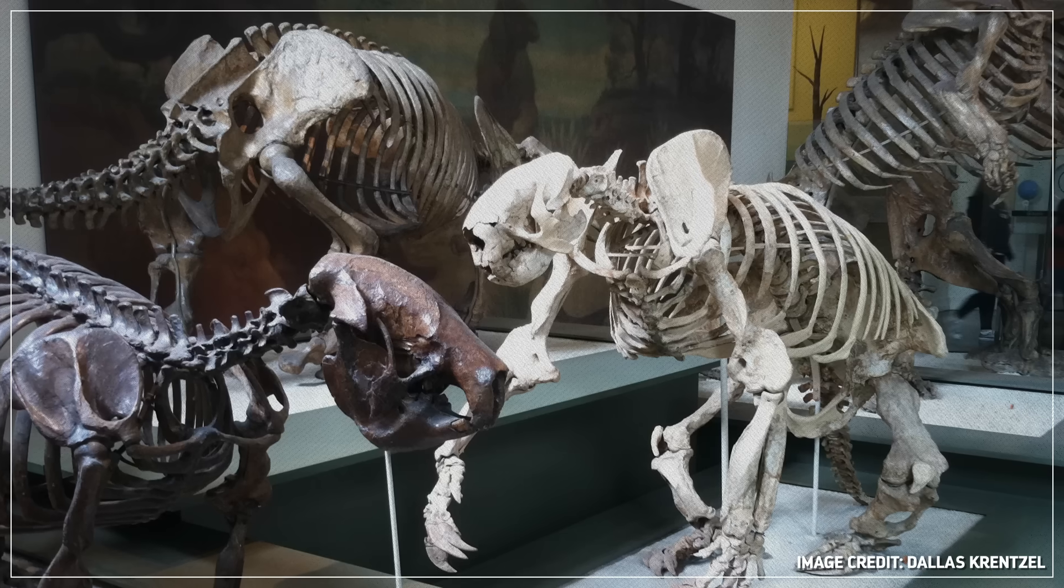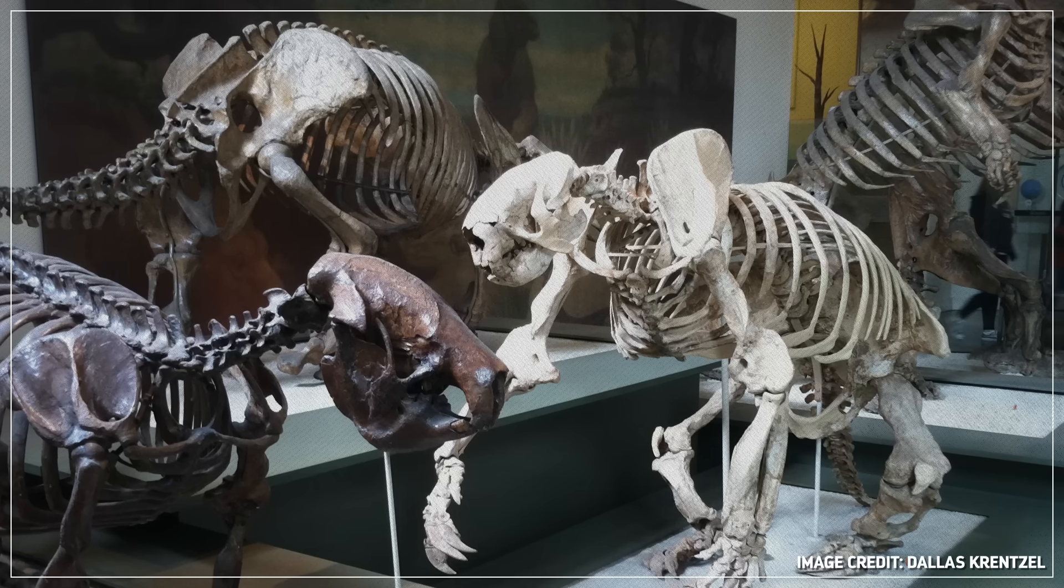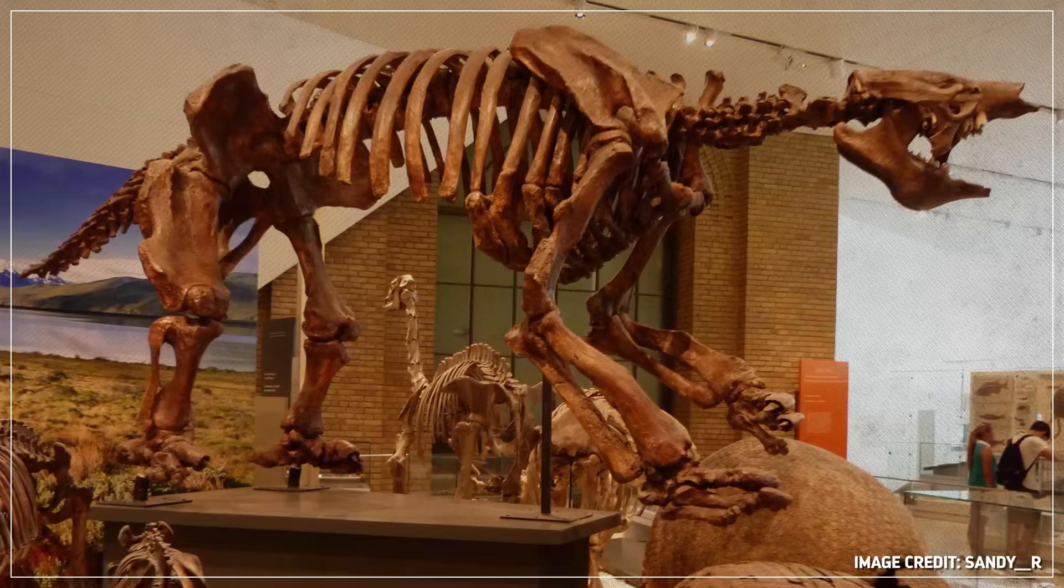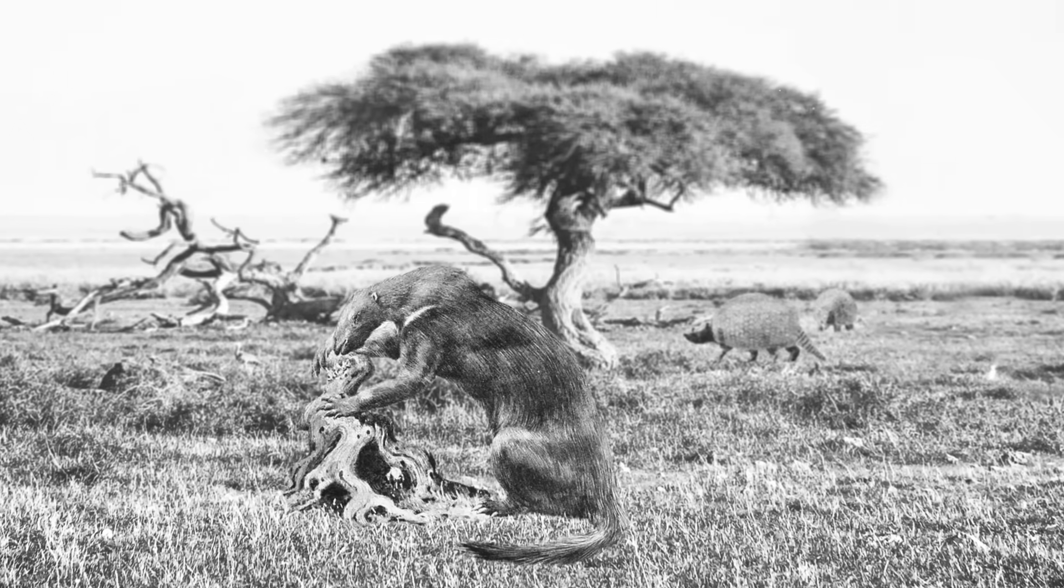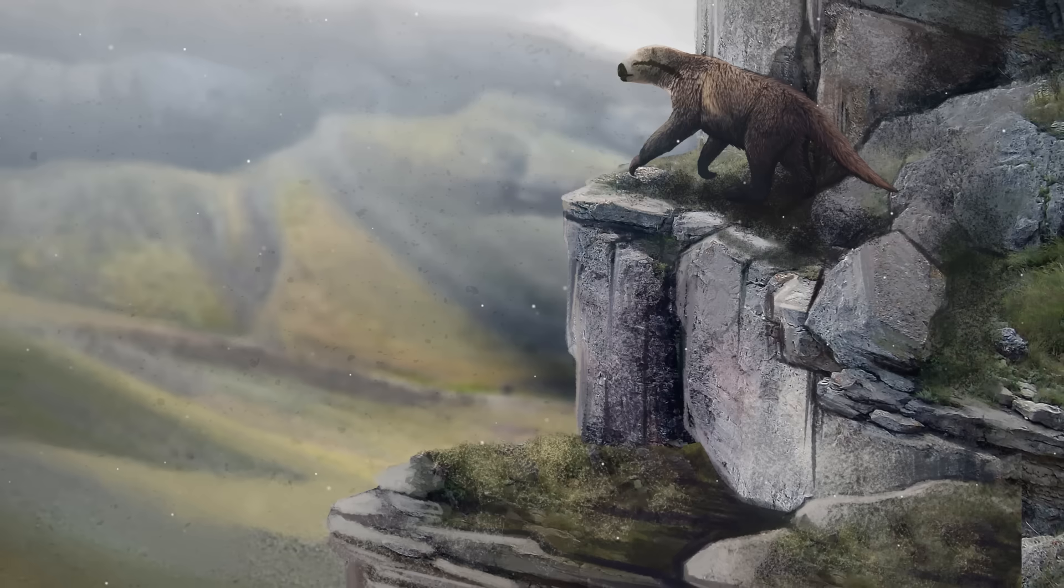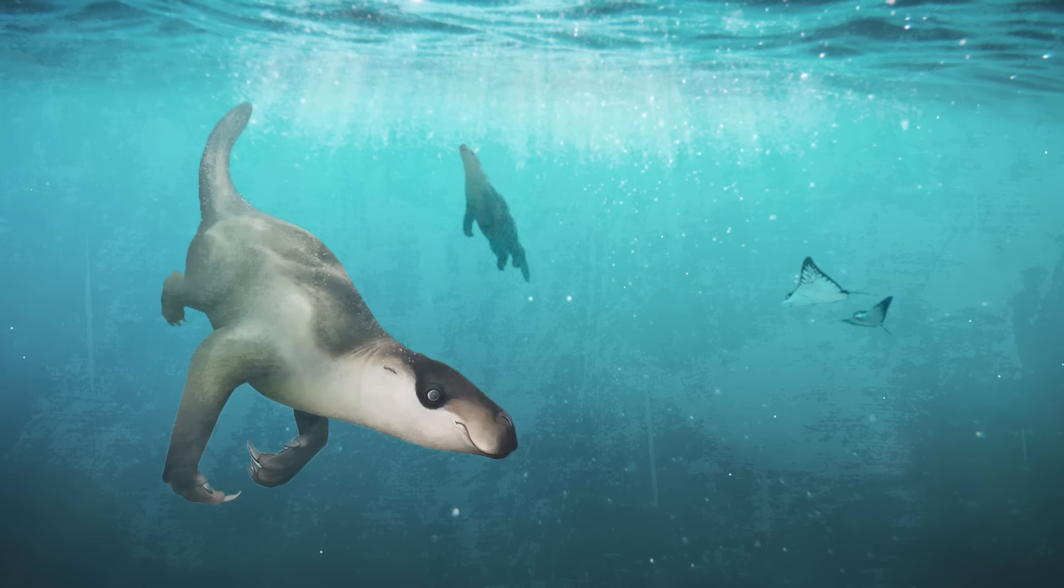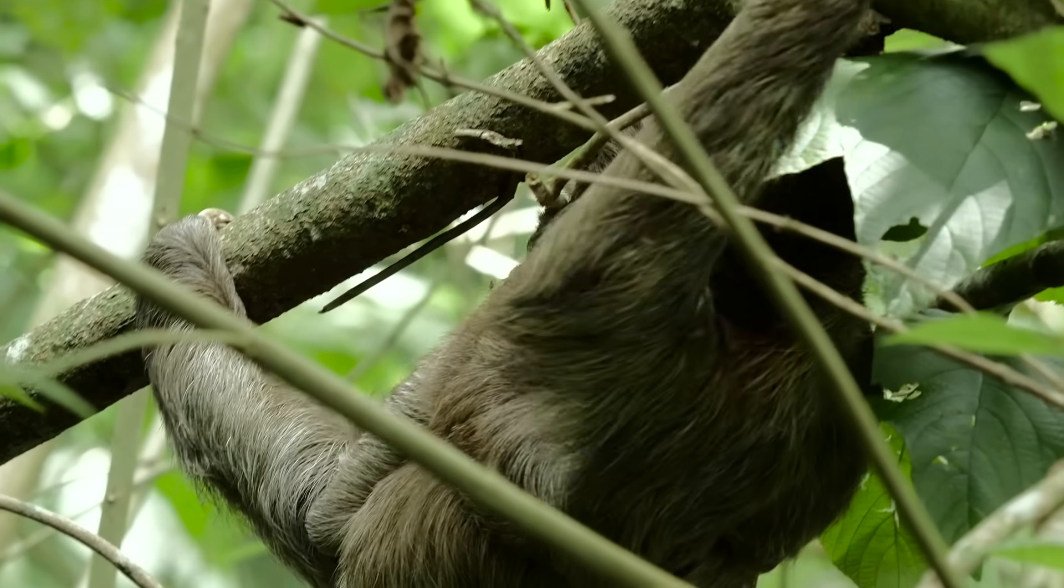Usually, herbivores of the same size compete with each other for food. So how did so many sloths live together without competing each other into extinction? The answers to that question can help us understand why sloths have been able to occupy so many different niches over time, and why they've been so successful, even to this day.